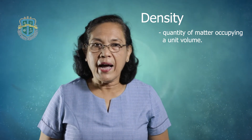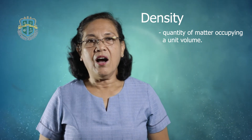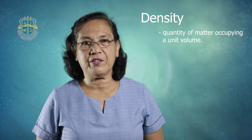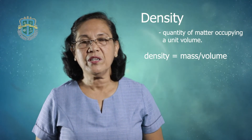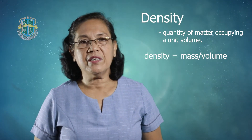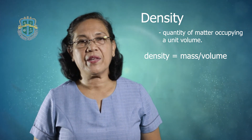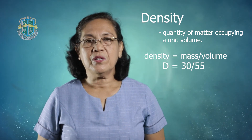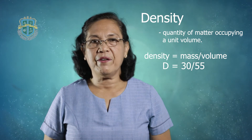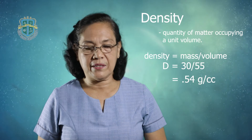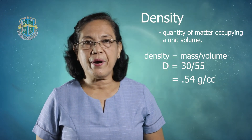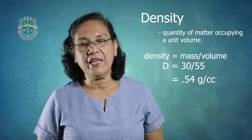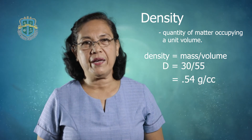Suppose we are asked to get the density of a substance with a mass of 30 grams that occupies a volume of 55 cubic centimeters. Substituting into the formula — density equals mass divided by volume — we have 30 divided by 55. The answer is density equals 0.54 grams per cc, or 0.54 grams per ml. Note that 1 cc is approximately equal to 1 ml.